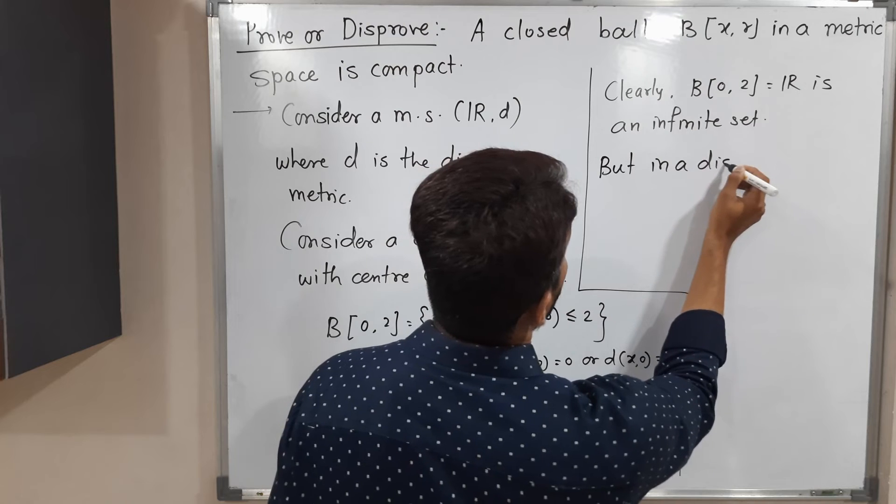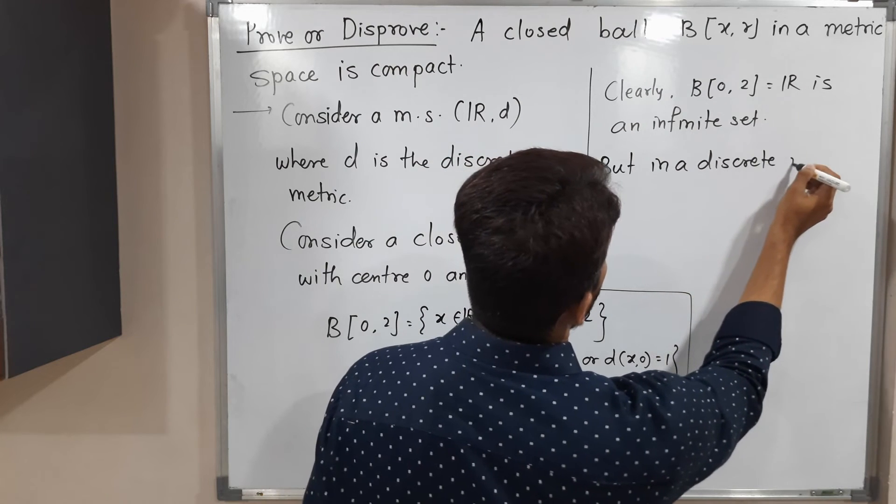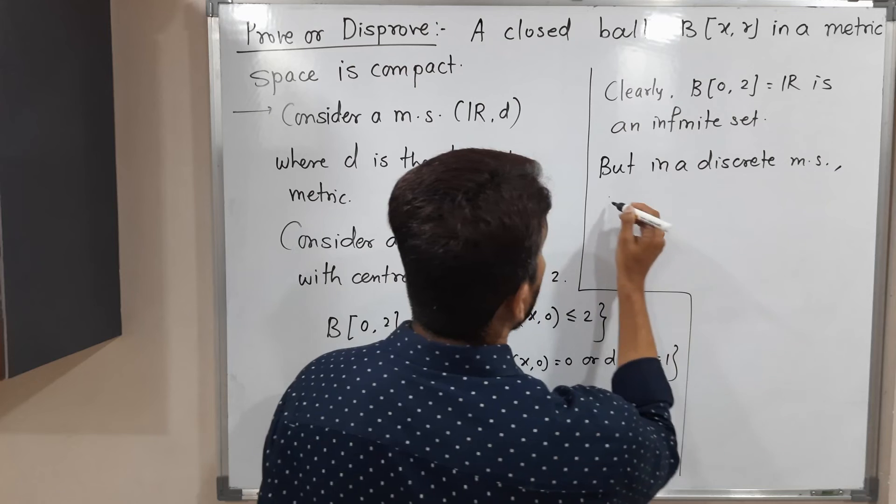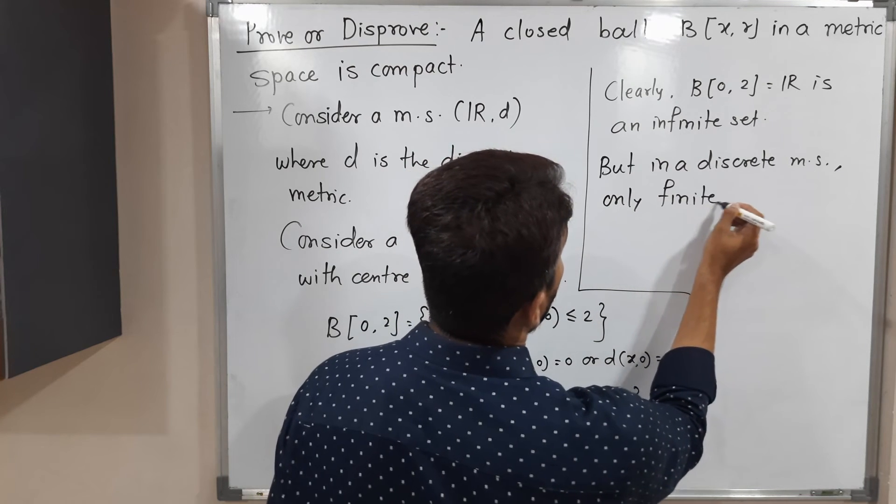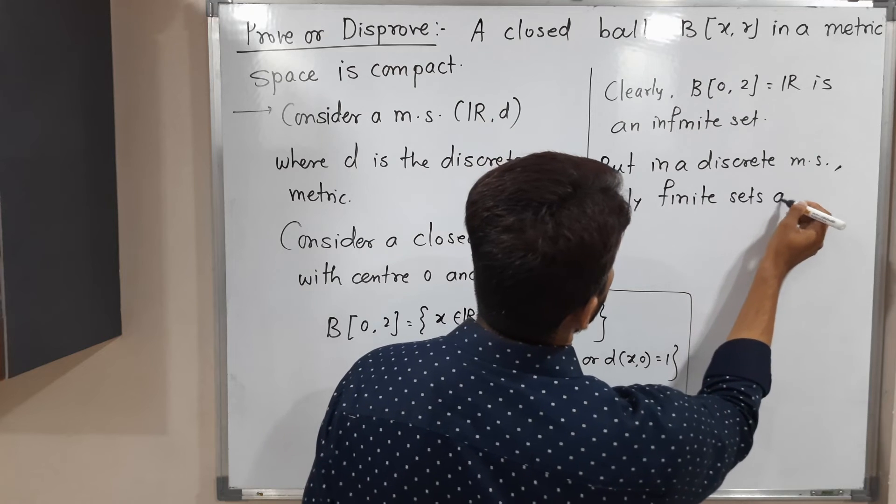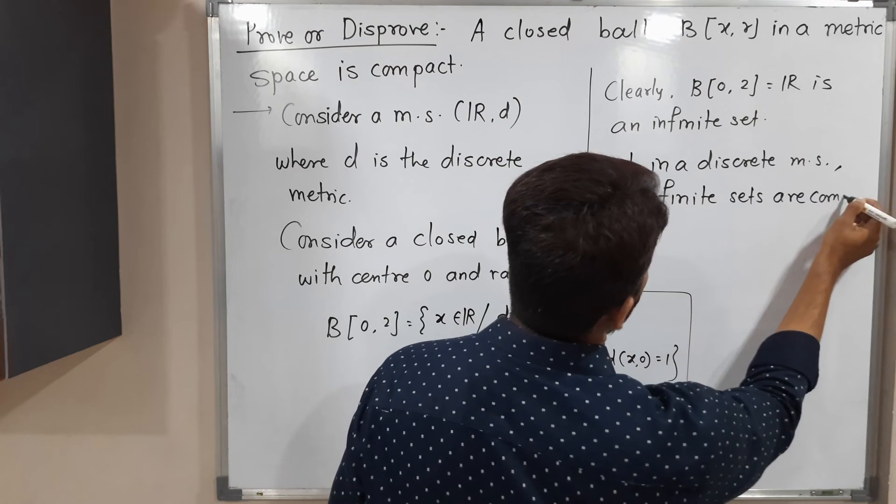But in a discrete metric space, there is one result: only finite sets are compact. See, this result we have already proved in our previous videos.